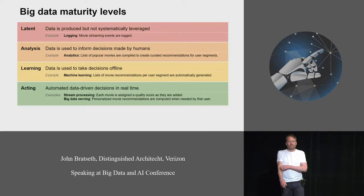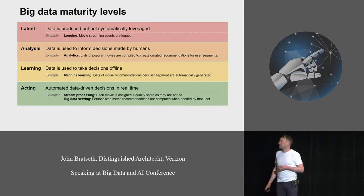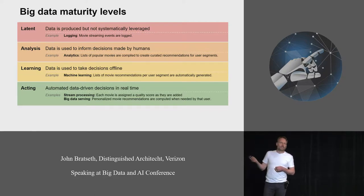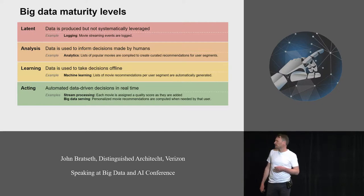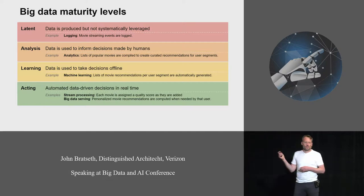I'd like to start by talking about the maturity levels that organizations go through as they adopt big data. At first they are at the latent stage where they just produce data by producing logs and so on but don't systematically use it for anything. For example, if we consider a movie streaming site, they produce logs about who is streaming what movies but don't really use them.